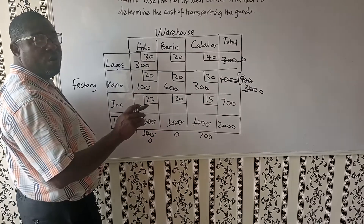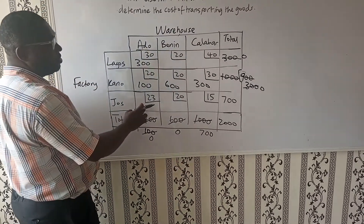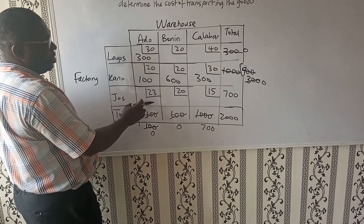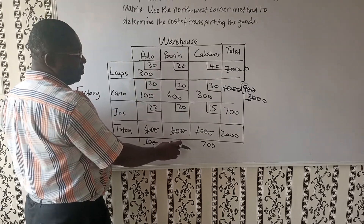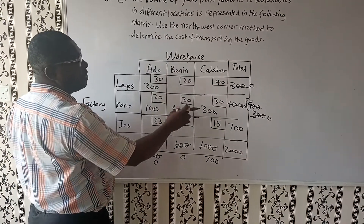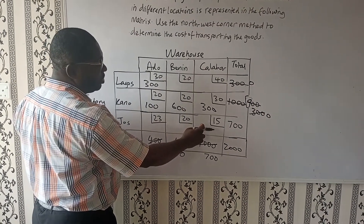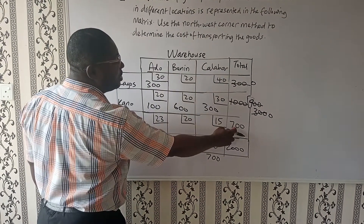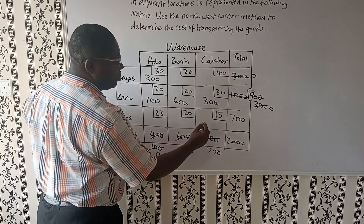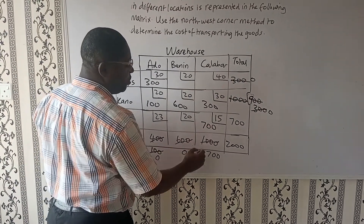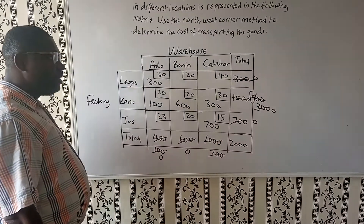We still have 700 outstanding demand from Calabar. In order to fill this, we go to the next row. Ado has been satisfied — skip. Benin has been satisfied — skip. The last source is Jos. Jos has 700 outstanding, which is exactly what Calabar is demanding. So we fill in 700 from Jos to Calabar. All supplies and demands are now satisfied.